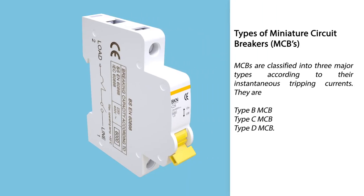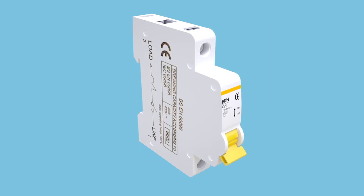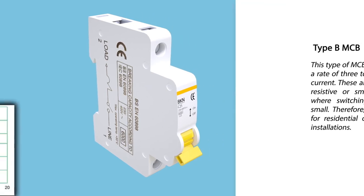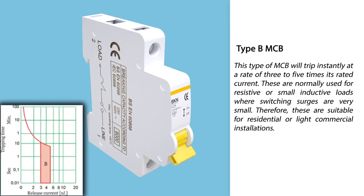Types of miniature circuit breakers: Miniature circuit breakers are classified into three major types according to their instantaneous tripping currents — Type B, Type C, and Type D. Type B will trip instantly at a rate of three to five times its rated current. These are normally used for resistive or small inductive loads where switching surges are very small, and are therefore suitable for residential or light commercial installations.